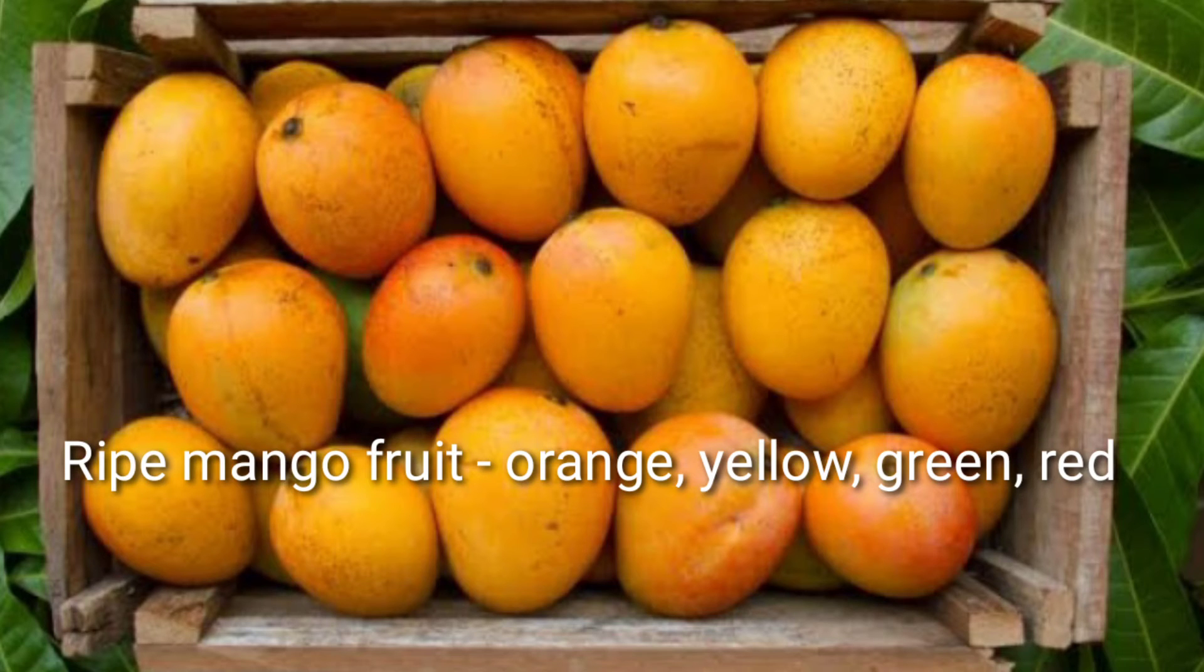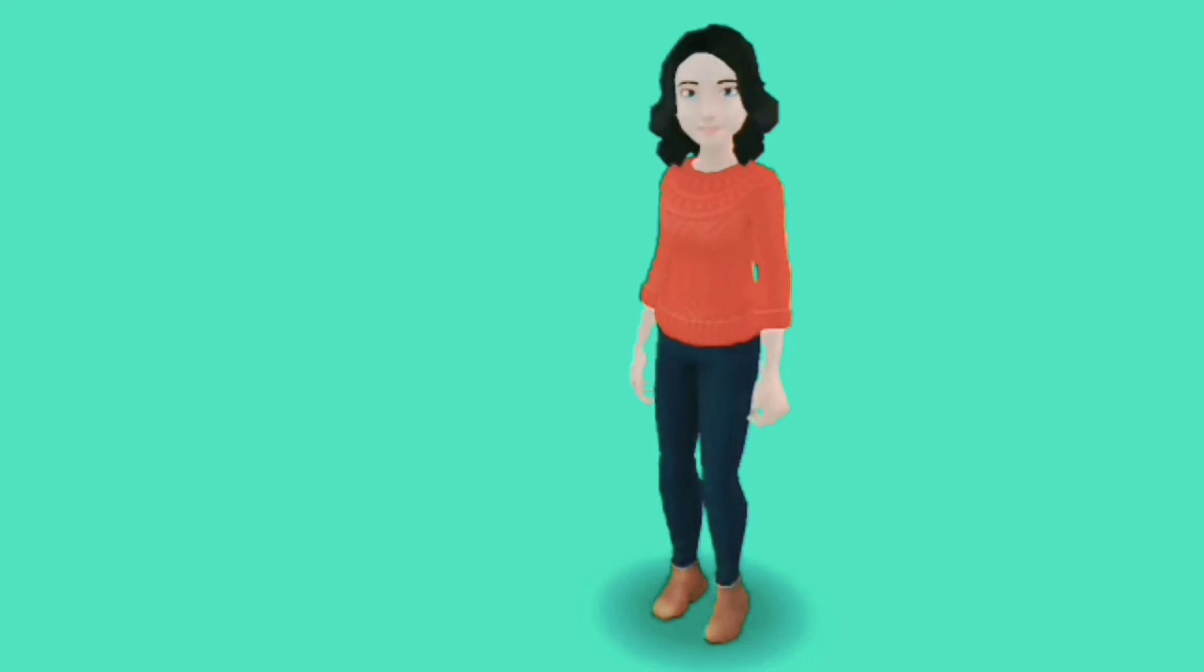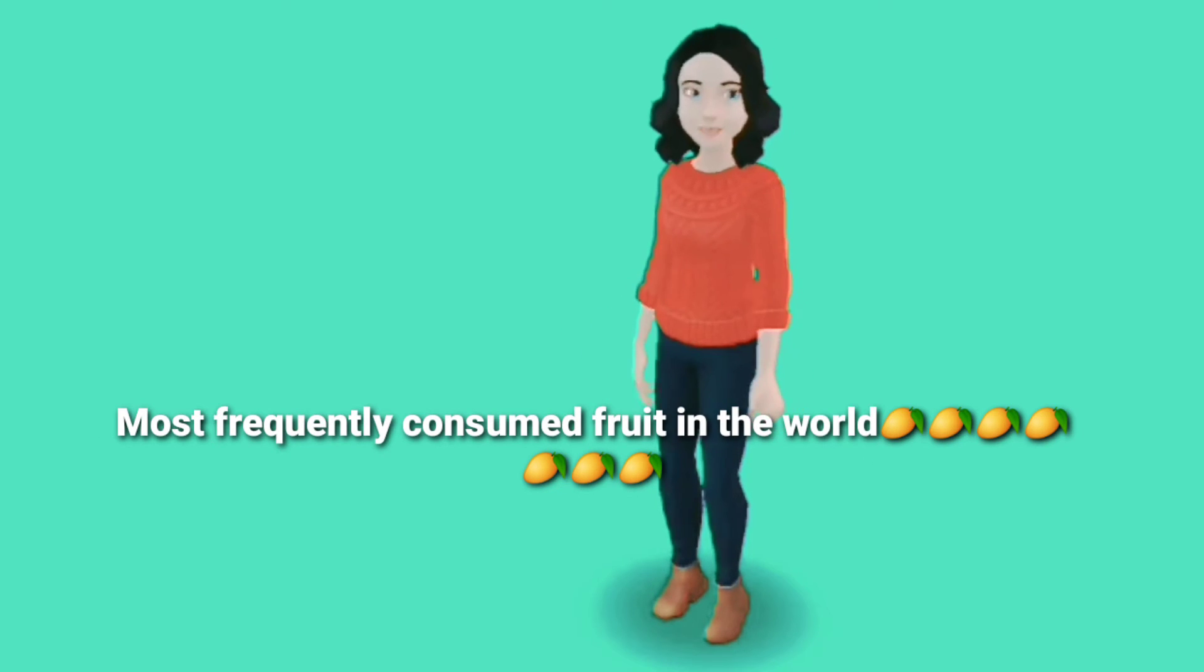Ripe mangoes come in orange, yellow, green, and red colors. Mangoes are eaten all over the world as a frequent daily food and fruit.